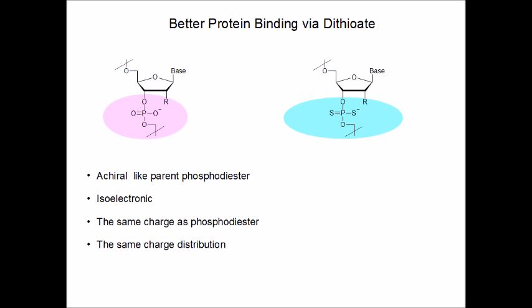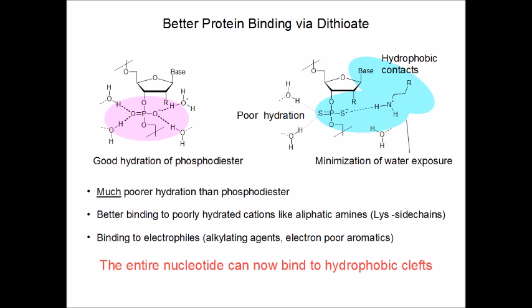However, we succeeded in making these compounds. They are achiral, like phosphodiesters, isoelectronic with phosphodiesters, and have a similar charge distribution as the parent phosphodiesters. However, they are much less hydrated than the parent phosphodiesters. In fact, they show a greater ability to interact with hydrophobic residues, such as electron-poor aromatics or alkylating agents.